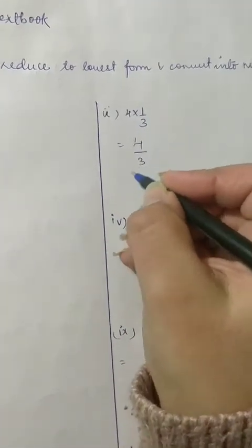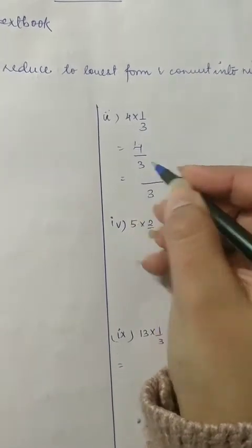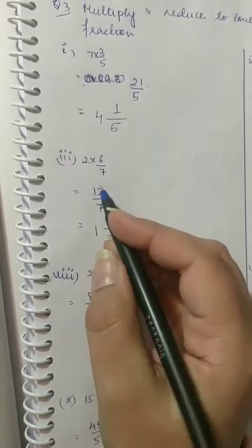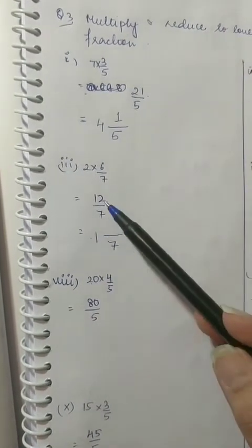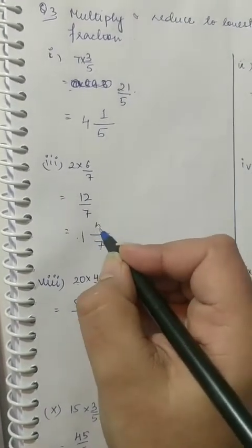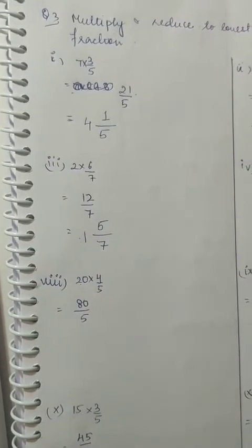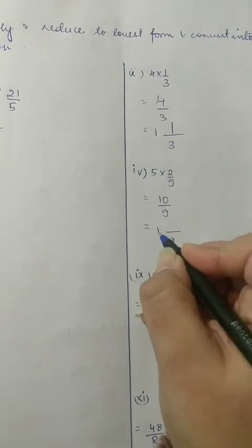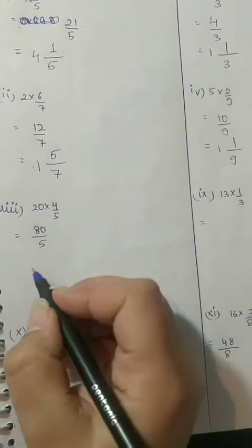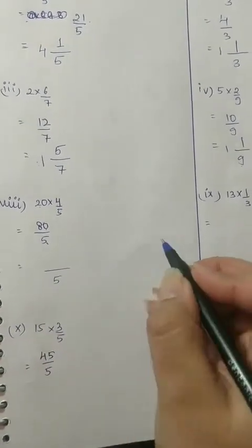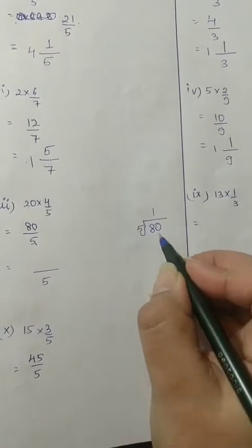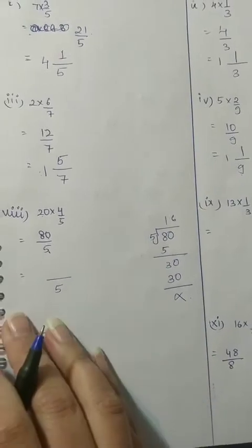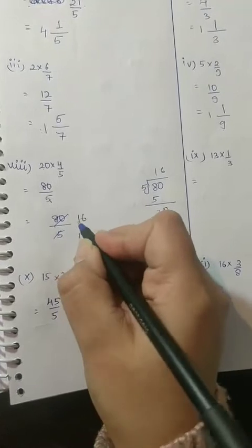This is 4 into 1 is 4 divided by 3, converting it into a mixed fraction क्योंकि यहाँ बड़ा है नीचे छोटा है. 3 ones are 3 और बचा 1. Here again we have an improper fraction: 7 ones are 7, यहाँ 12 है. So 7, 1's are 7, 7 minus — अगर 12 से minus करेंगे तो 5. You can do it by division also, but at this stage you should be able to do this mentally. ठीक है? This is 10 by 9. Converting into mixed fraction: 9 ones are 9, remainder is 1. Now 80 and 5 — 5 को अगर हम 80 से divide करेंगे, 3 and 0 — हम cancel out कर सकते हैं. 1 and 16 is the answer.